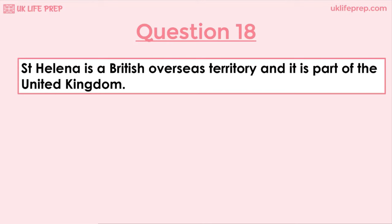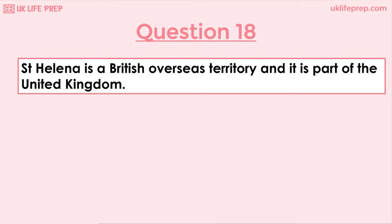Question 18: St Helena is a British overseas territory and is part of the United Kingdom. True or false? The correct answer is false. This question can seem a bit tricky because St Helena is a British overseas territory, but it is not part of the UK, whereas this question says it is part of the UK, and therefore the answer is false.